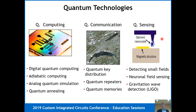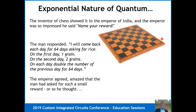I'll talk more about quantum computing now. The real deal with quantum computing is given in this chart — it's exponential, it's very different. To give an example, there's an apocryphal but fun story: the inventor of chess went to the emperor of India, and the emperor was so impressed he said, 'Name your reward.'